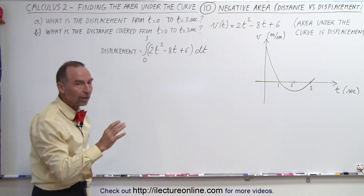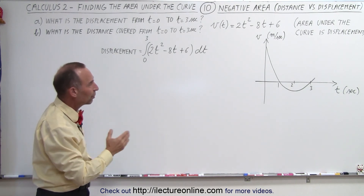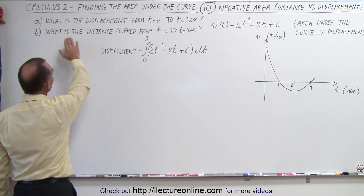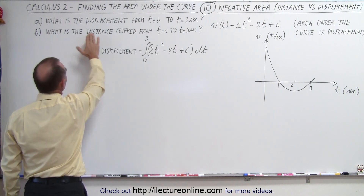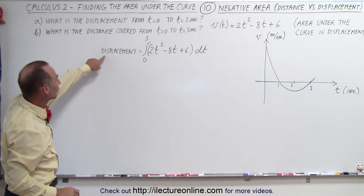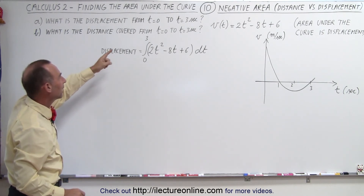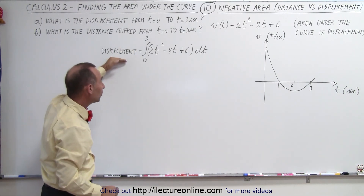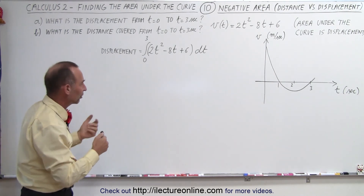We're going to find both the displacement and the distance covered by the object between 0 and 3 seconds. What is the displacement from t = 0 to t = 3 seconds, and what is the distance covered from t = 0 to t = 3 seconds? First we'll calculate the displacement, which means calculating the area underneath the curve from 0 to 3. In the case of displacement, negative area is indeed negative displacement.